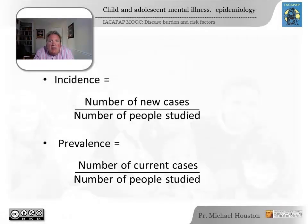Incidence is the measure of the probability of the occurrence of an illness in a population within a specific period of time. We can express it as the number of new cases divided by the number of people being studied. For example, if you worked in a city with 100 adolescents and during the previous year 10 of them were diagnosed with depression, the incidence of depression among adolescents would be 10 divided by 100, or 10%. Using incidence allows one to look at whether an illness is occurring more or less frequently in a given period of time, and it allows us to predict how many new cases we could expect to develop.